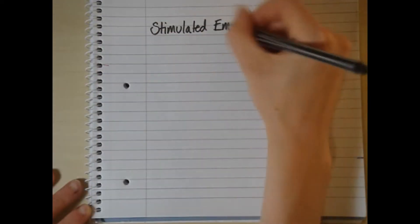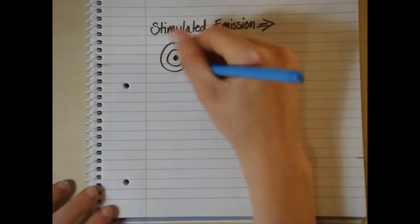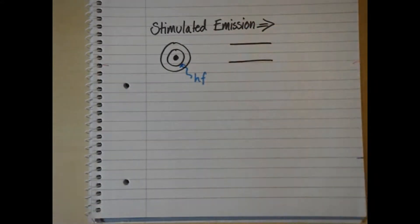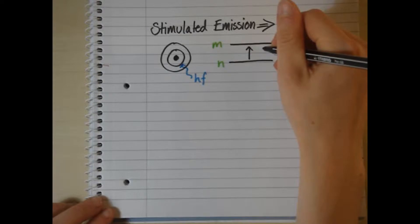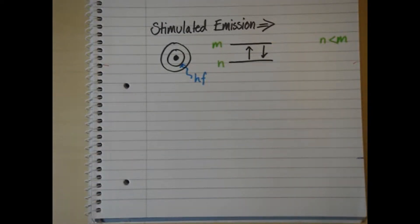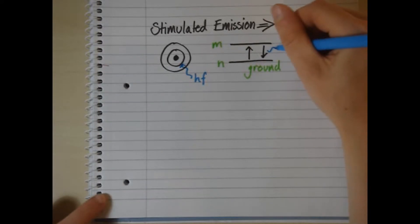If an electron in an atom gains a discrete or quantized amount of energy, then it will jump up to a higher energy level and become excited. This is an unstable state to be in, so the electron will spontaneously jump back down to the lowest energy level possible, or ground state. The atom is de-excited and returned to the energy it was before.